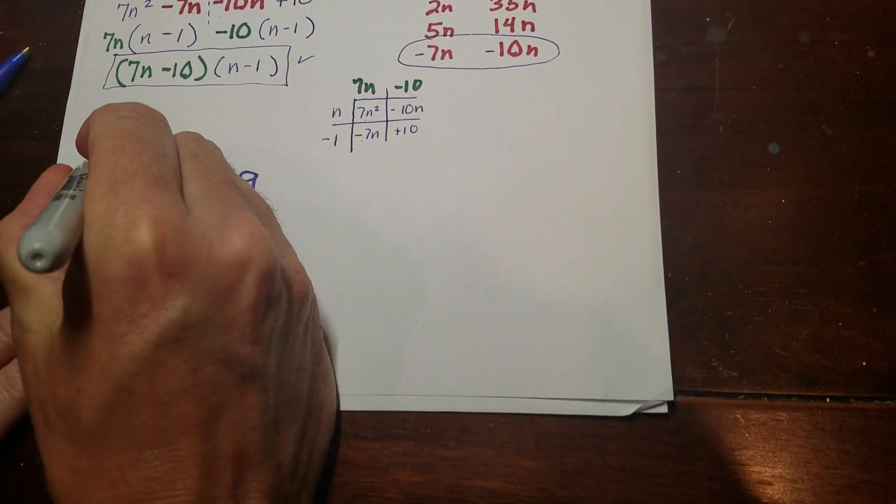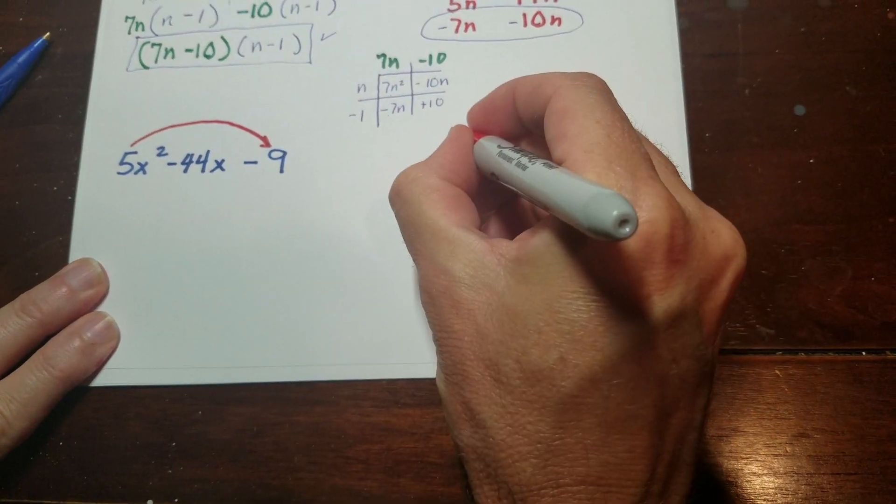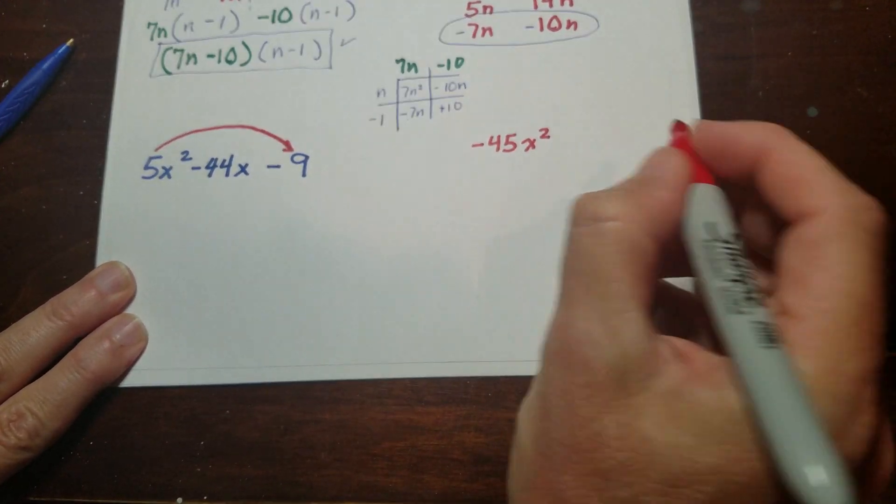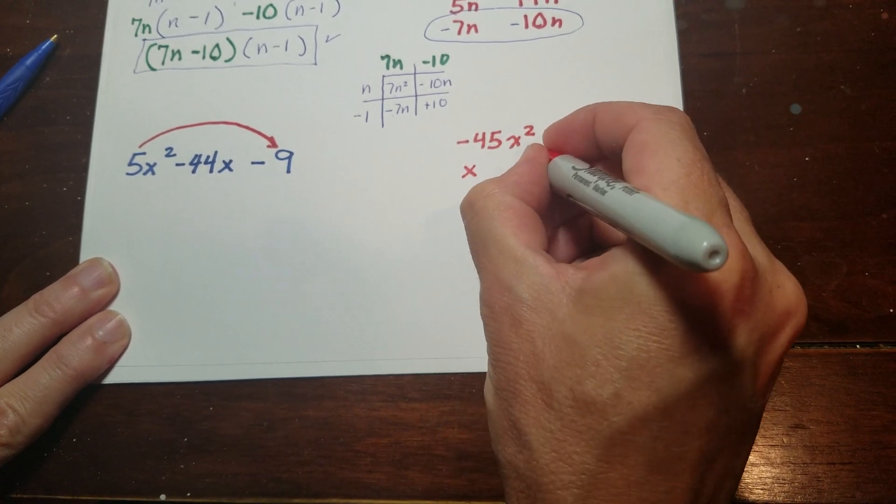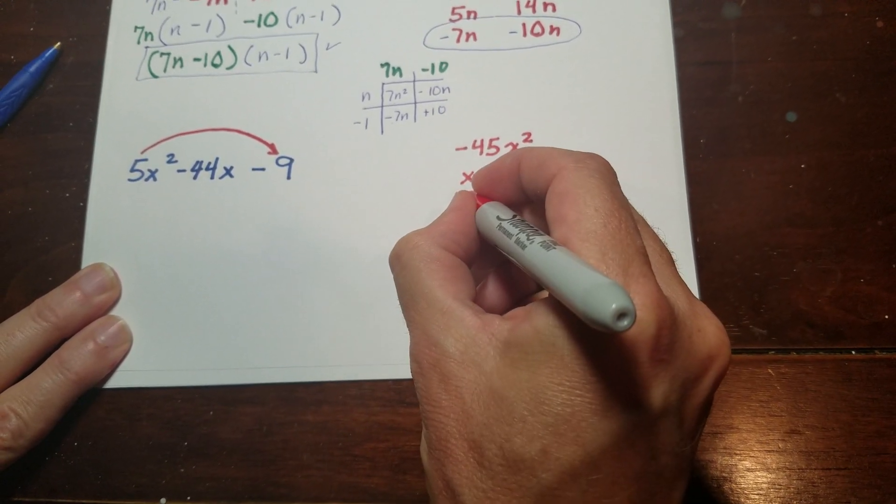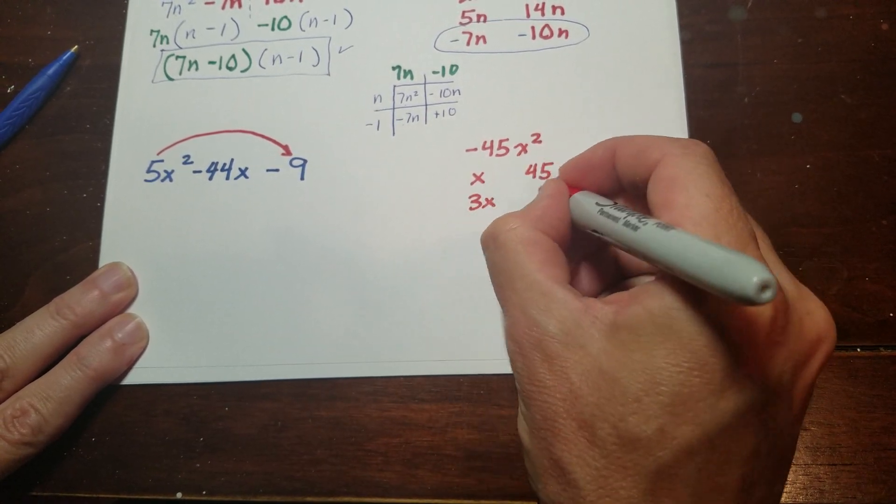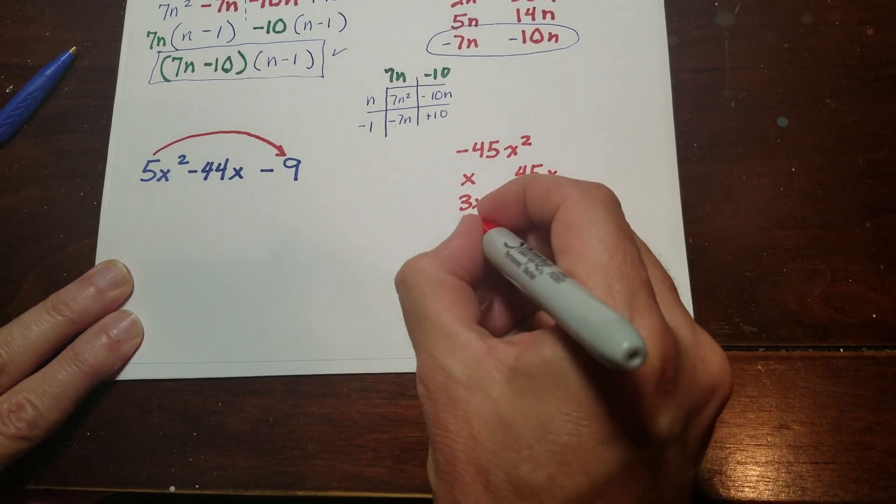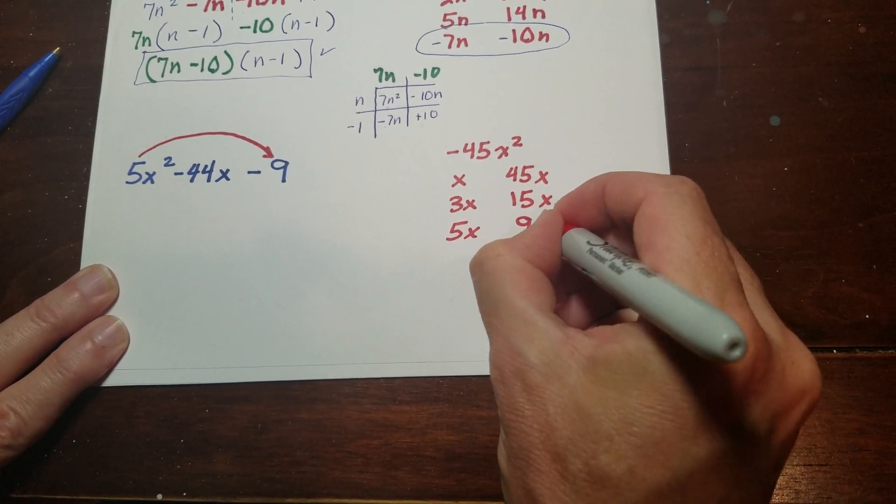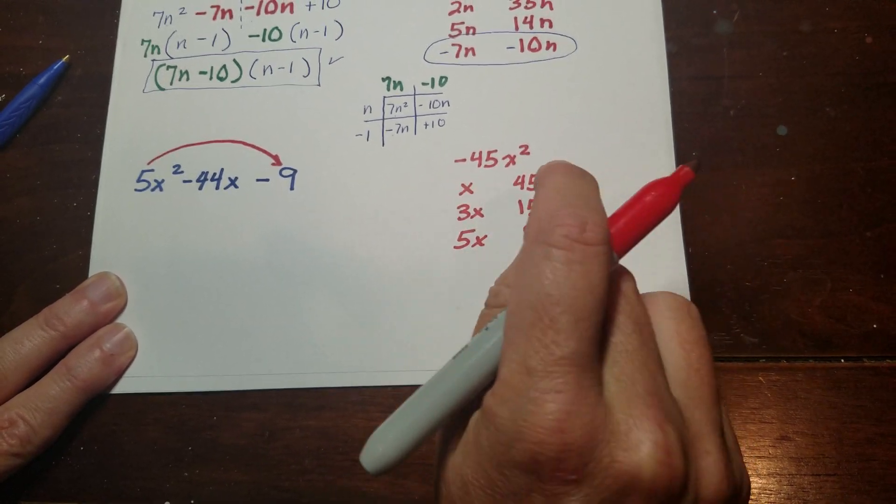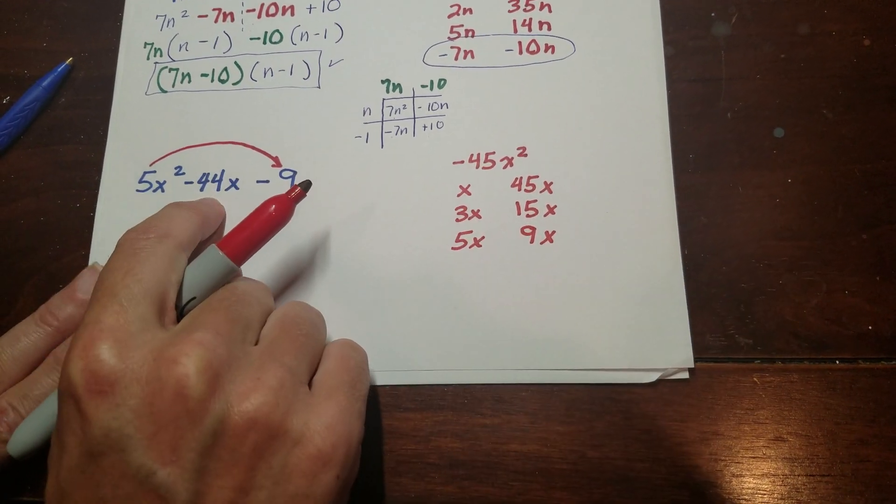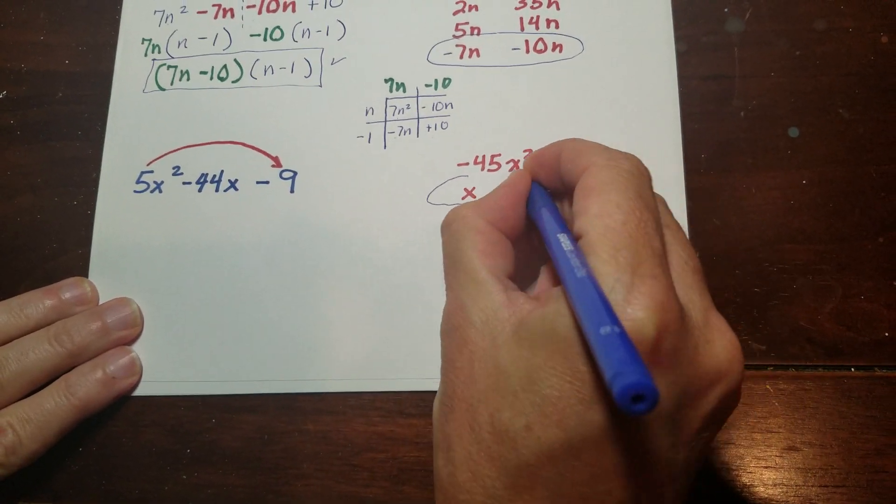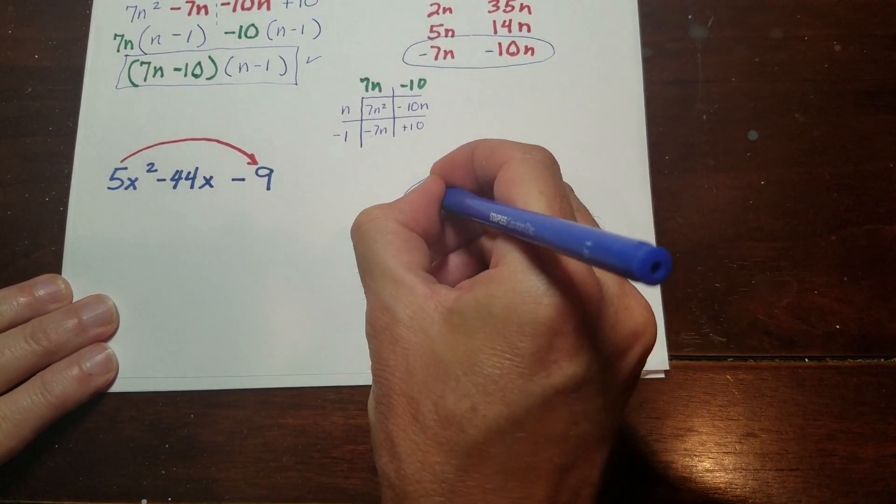I'll do one more example. So 5 times negative 9 is negative 45x squared. So I got x and 45x. I have 2 won't work. 3 will work with 15. 4 doesn't work. 5 will work with 9. And then 6, 7, 8 don't work. And then I'm at 9, so that's everything. So I have to get a minus 44. So that's pretty easy. That's this pairing right here. So I'm going to have a negative 45 and a positive x.